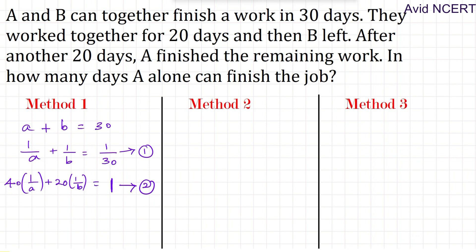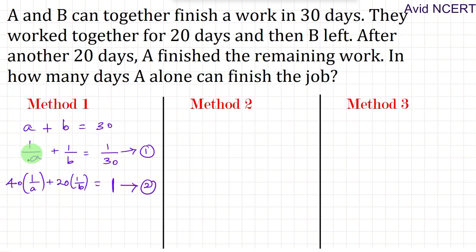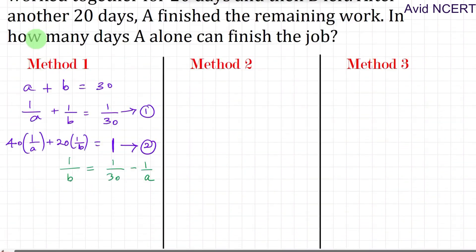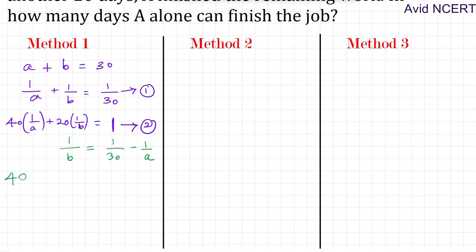By solving these two equations we find the work of A. Since we need to find A, I am taking everything in terms of A. From the first equation, 1/B equals 1/30 minus 1/A. Substituting this into the second equation: 40/A plus 20 times (1/30 minus 1/A) equals 1.